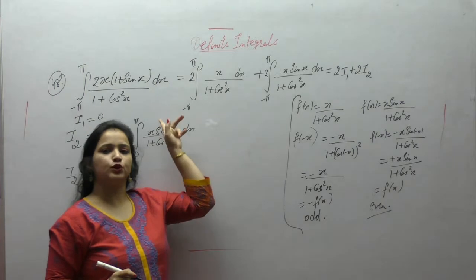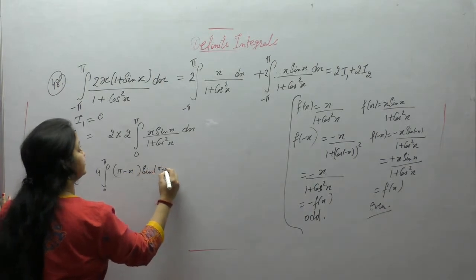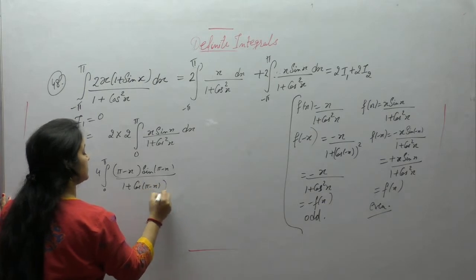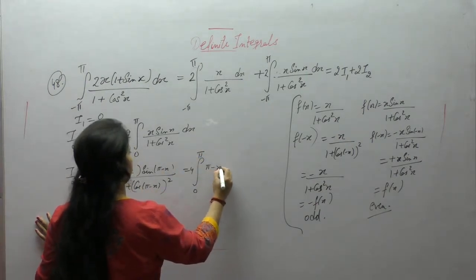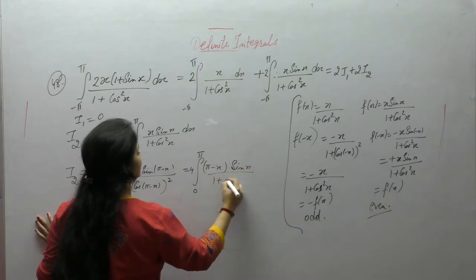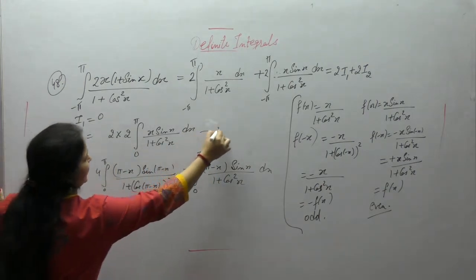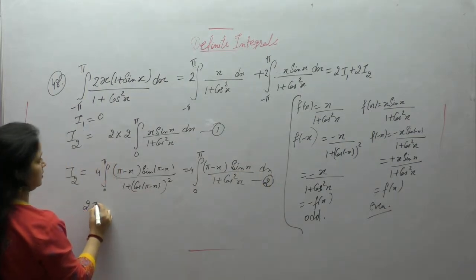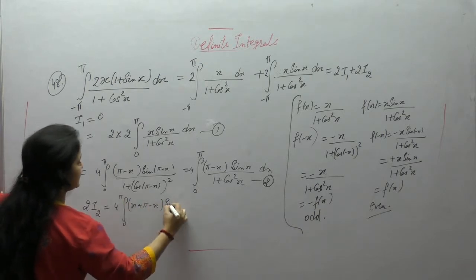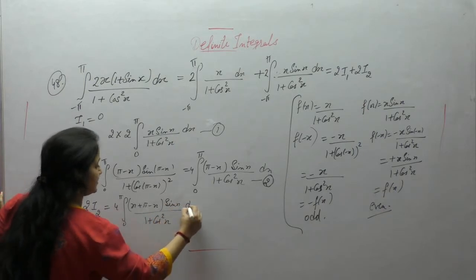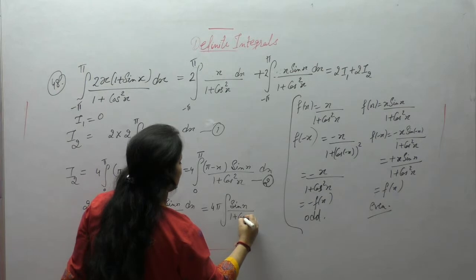Apply the formula: integral from 0 to a of f(x) dx = integral from 0 to a of f(a − x) dx. Using sin(π − x) = sinx and cos(π − x) = −cosx, add the two expressions. Adding terms 1 and 2: x + (π − x) sinx upon (1 + cos²x). Since pi is constant, this gives 2I2 = 4π times integral from 0 to pi of sinx upon (1 + cos²x) dx.